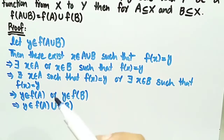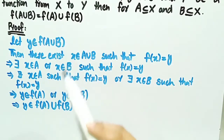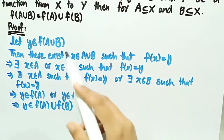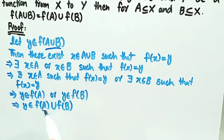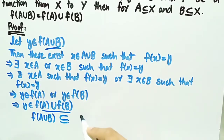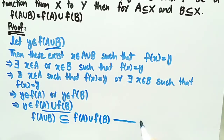In the start we took an arbitrary element y from f of a union b, and in the end we have shown that this element y also belongs to f of a union f of b. From these two we can write that f of a union b is contained in f of a union f of b. Let this be named as equation number 1.